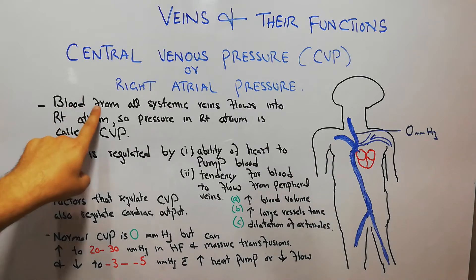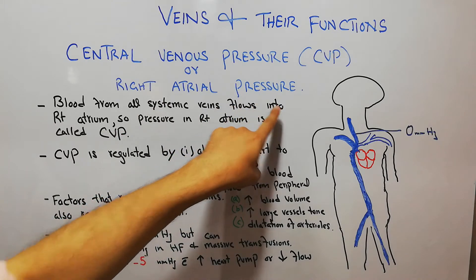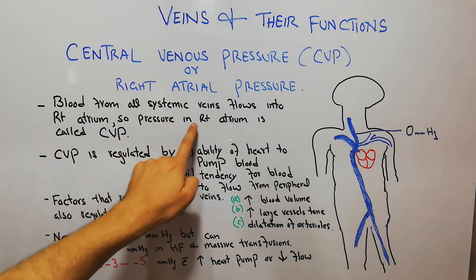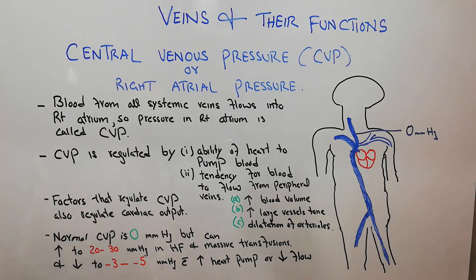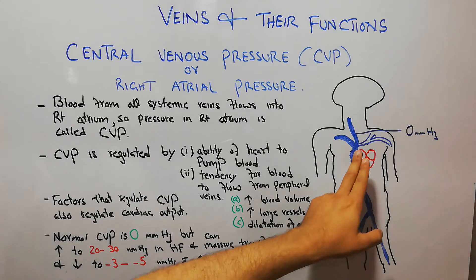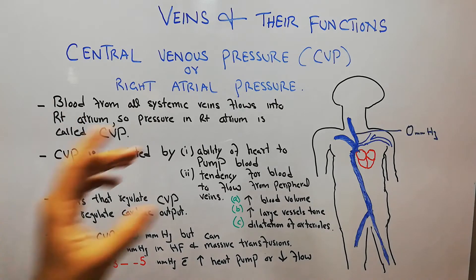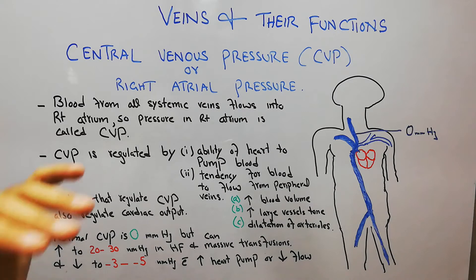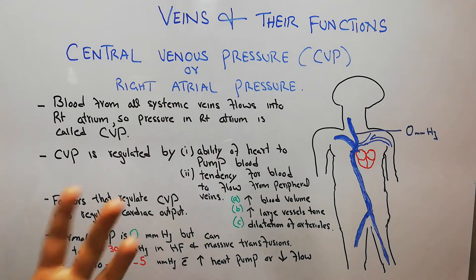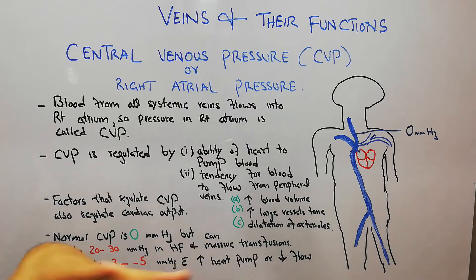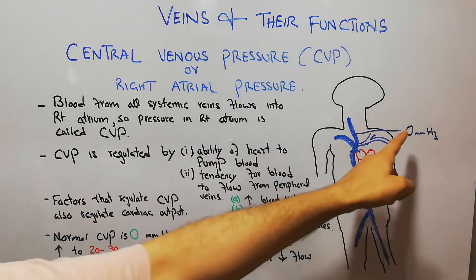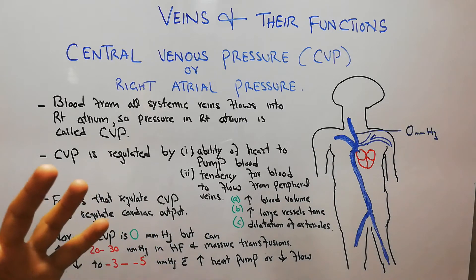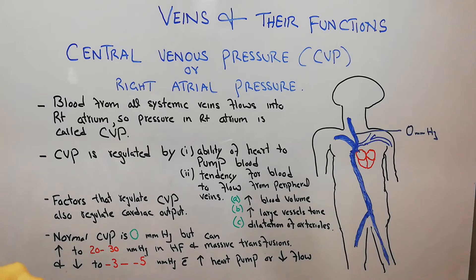Blood from all the systemic veins flows into the right atrium, so the pressure in the right atrium is called central venous pressure. All the blood from the limbs and viscera of the human body returns back to the right atrium. Central venous pressure is important to discuss because by measuring it, we can diagnose and treat a lot of diseases.